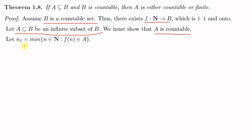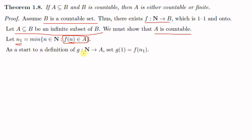Let n1 equal to the minimum of the set of all n in N such that f(n) is an element of A. That means n1 is the minimum value of n for which f(n) belongs to A. Now we will start defining a function g from N to A by setting g(1) equal to f(n1), where n1 is this element.